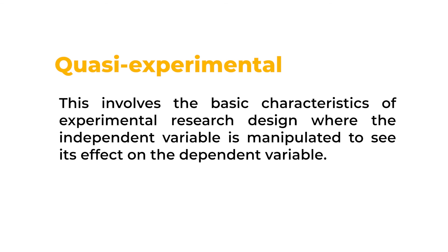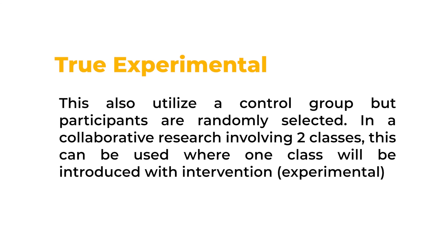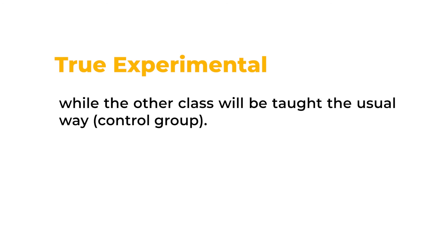Quasi-experimental involves the basic characteristics of experimental research design where the independent variable is manipulated to see its effect on the dependent variable. There is no random selection of participants, but there is a designated control group. In true-experimental, there is a control group and participants are randomly selected. In a collaborative research involving two classes, one class is introduced with the intervention and becomes the experimental group, while the other class is taught the usual way and serves as the control group. Among the three types, pre-experimental and quasi-experimental are commonly used because action research usually takes place in the classroom where grouping and randomization requires ethical considerations involving both participant and non-participant members of the class.